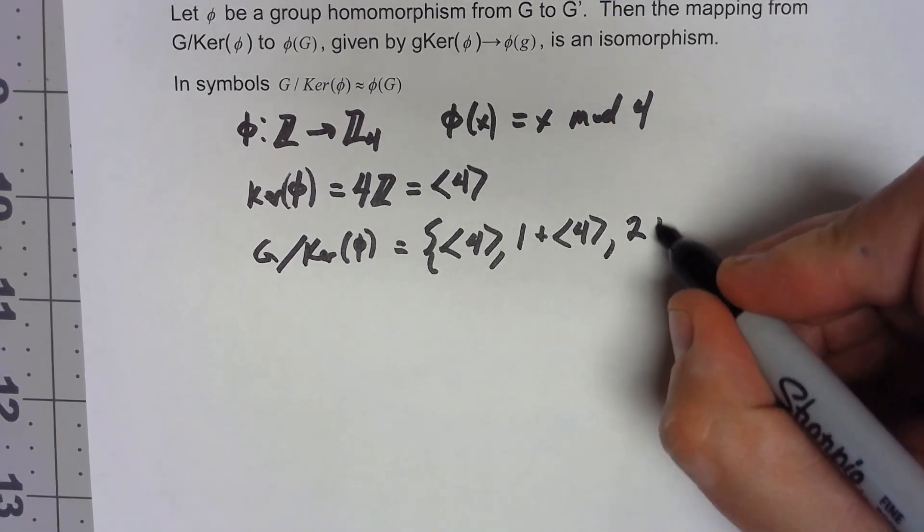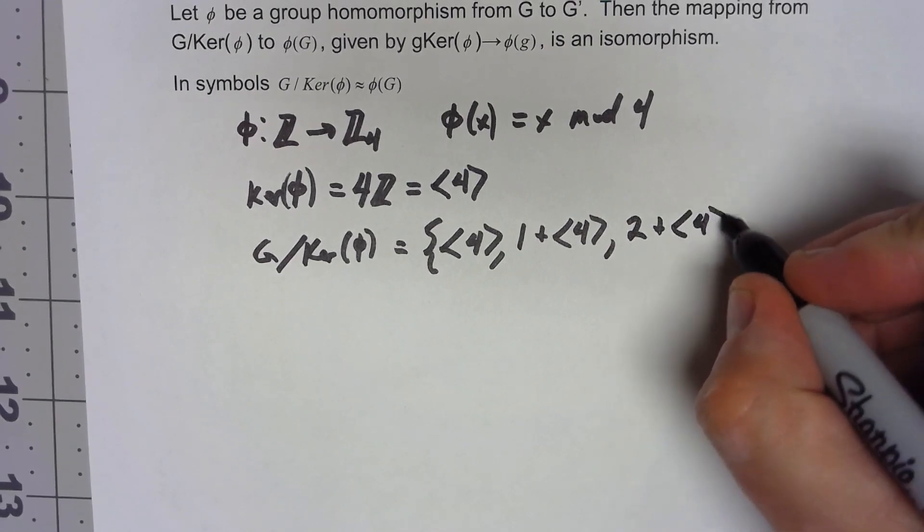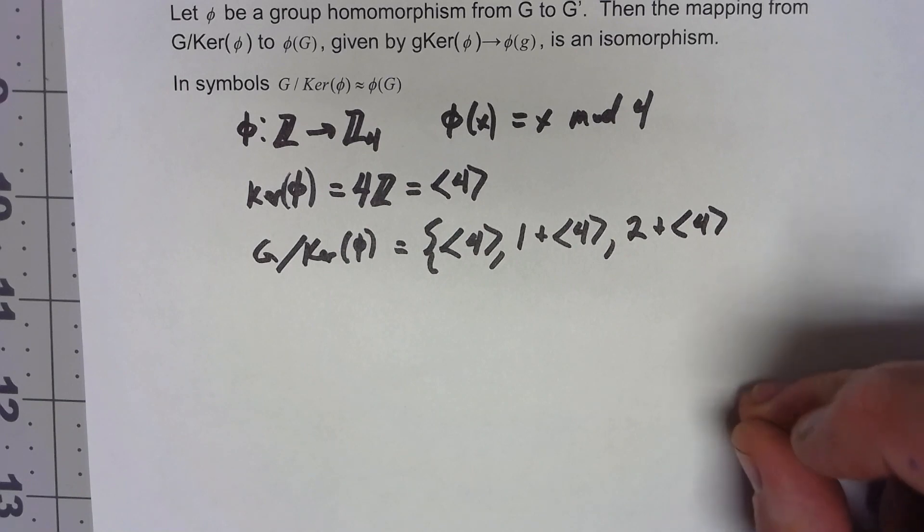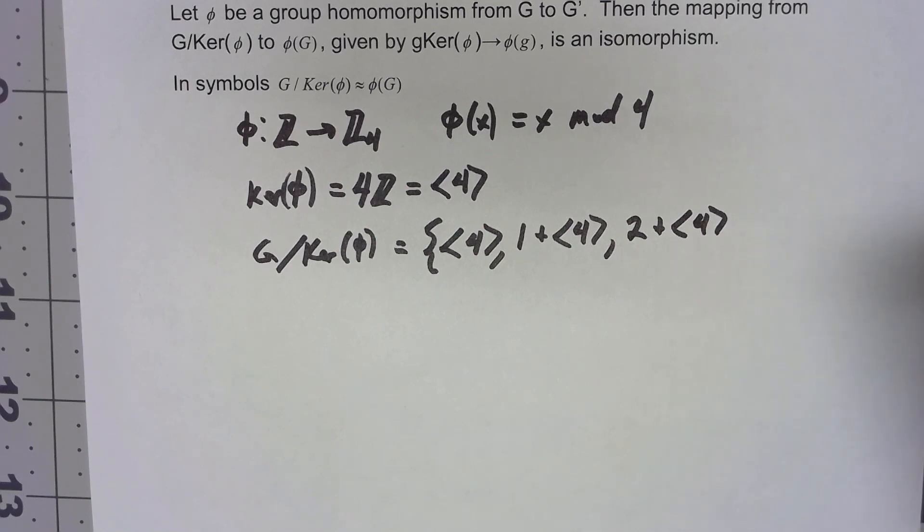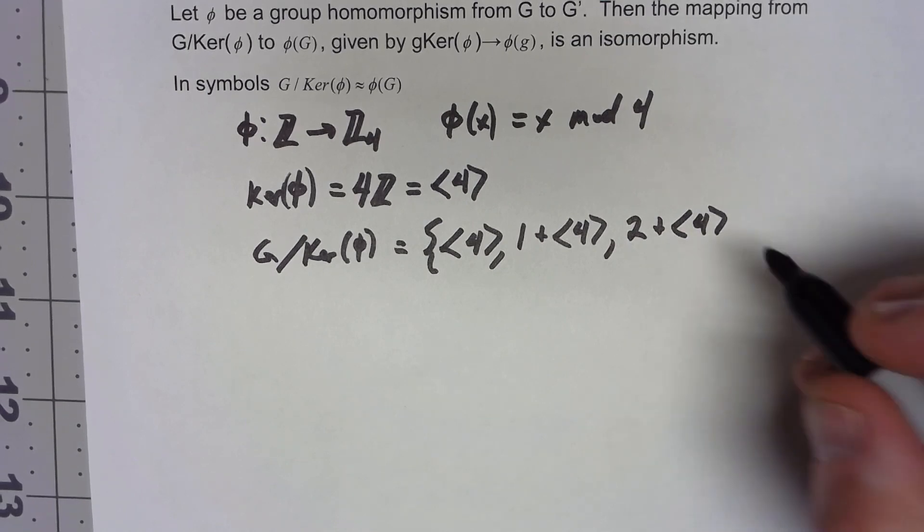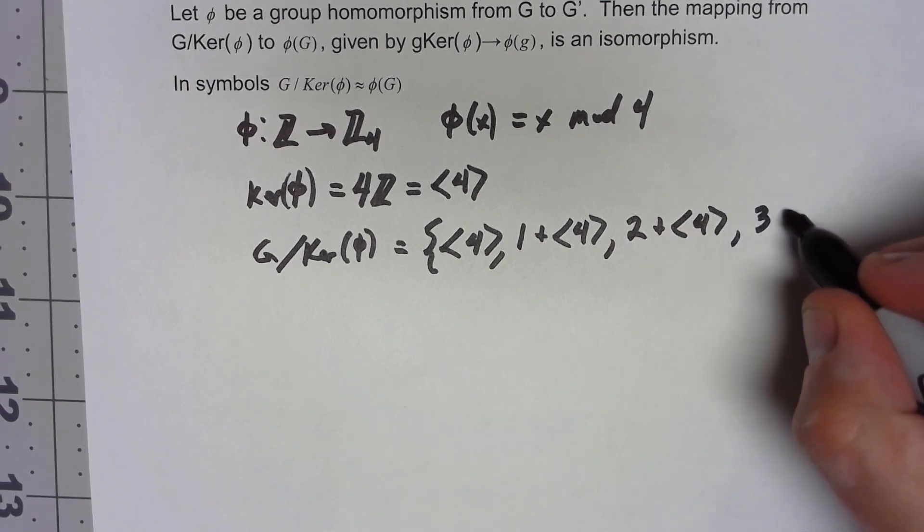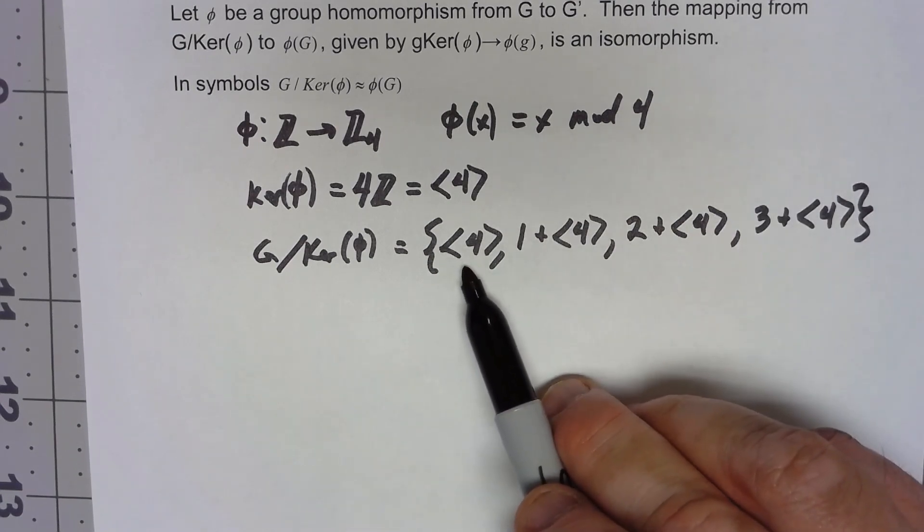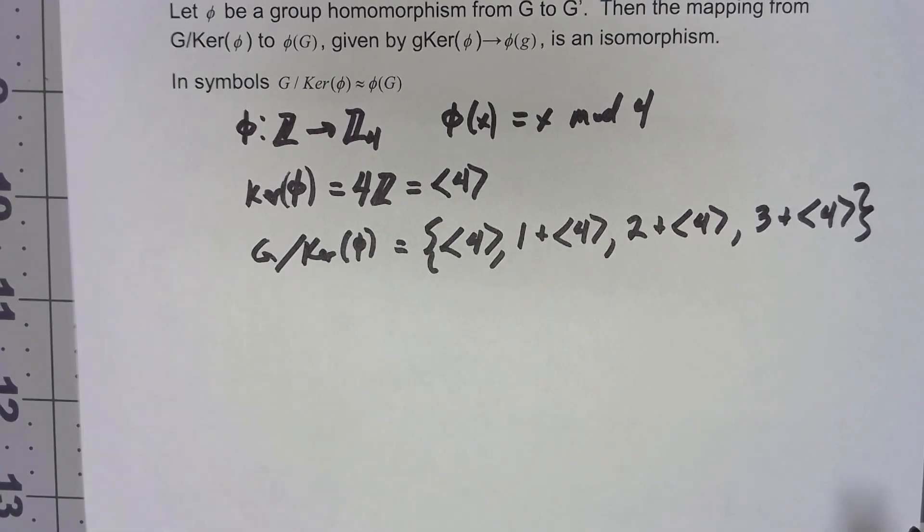We're going to get 2 plus 4. We're going to get 2, 6, 10, 14, also negative 2, negative 6, negative 10, negative 14, and 3 plus 4. And that's going to be all of them because when I do 4 plus 4, that's going to give me back to this coset.